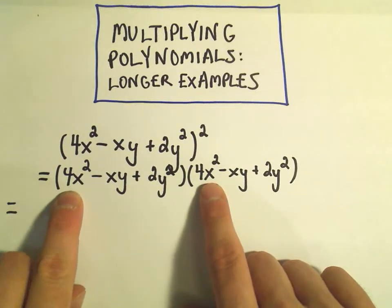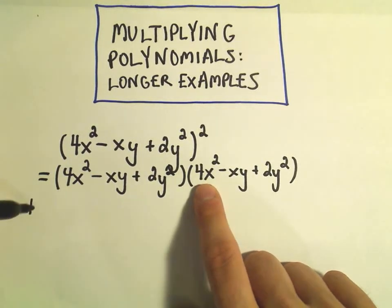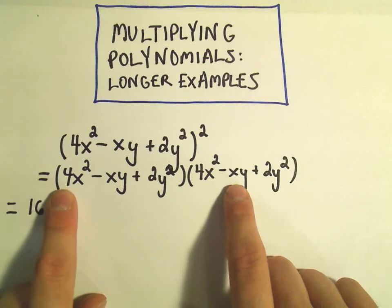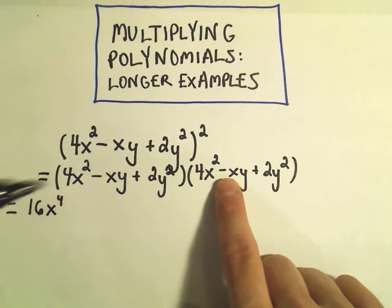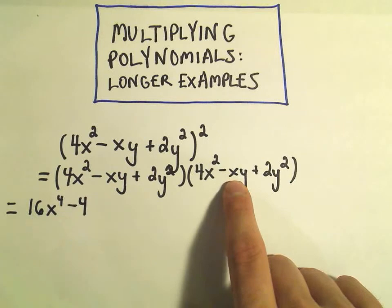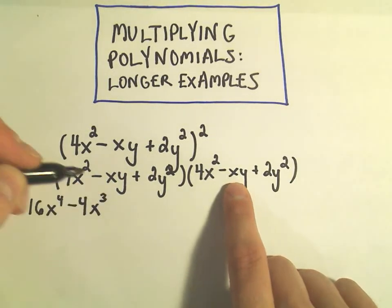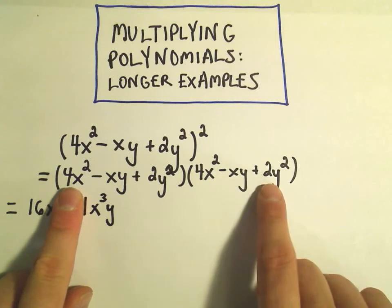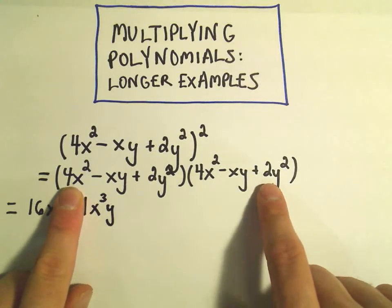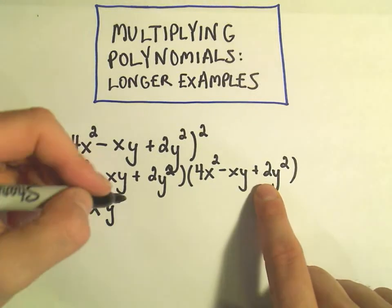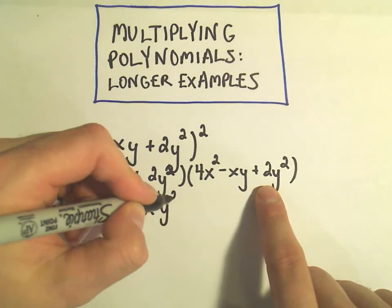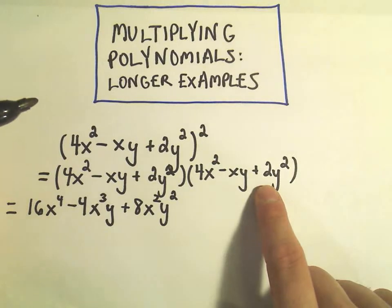So 4x² times 4x², I think 4 and 4 is 16. x² and x² is x to the fourth. Then I move to my next one. I think positive 4 times negative 1 would be negative 4. x² times x would be x to the third. And then I just stick the y on there. And then I think 4x² times positive 2y². 4 times positive 2 is simply positive 8. And x² times y² we'll just write as x²y².